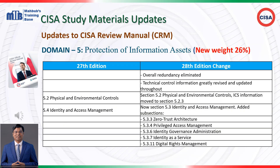Following the updates in Domain 4, Domain 5 — Protection of Information Assets — in the 28th edition (2024) of the CISA Review Manual has undergone significant changes to better reflect current practices and technological advancements in information security. The section on physical and environmental controls remains as Section 5.2 but now includes updated content with ICS (Industrial Control Systems), including a new Section 5.2.3.